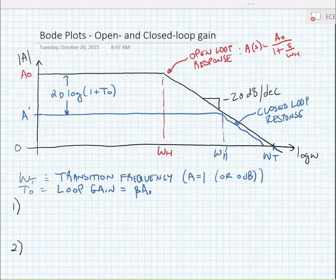So, just by reading the Bode plot, we can find the loop gain. The difference between the 0 dB line and the closed loop gain is 20 log of 1 over beta.